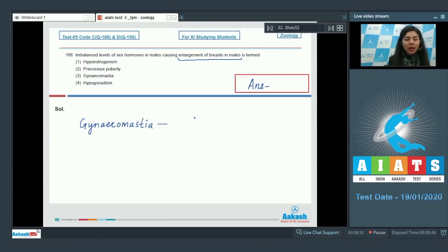This results due to higher than required levels of estrogen in males. The correct answer here would be option number three, gynecomastia. Option number one, hypoestrogenism, means lack of estrogen. Precocious puberty is early onset of puberty.